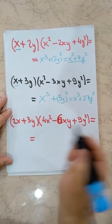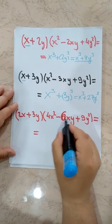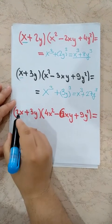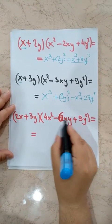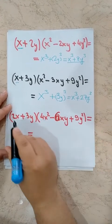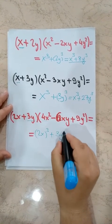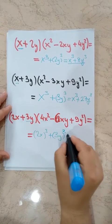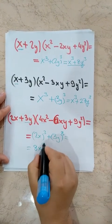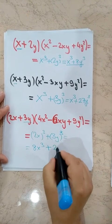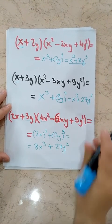Let's try another example: 2X plus 3Y times 4X squared minus 6XY plus 9Y squared. First term is 2X and second term is 3Y. So we get 2X cubed plus 3Y cubed. Opening: 2 cubed is 8, X cubed is X cubed, plus 3 cubed is 27, Y cubed is Y cubed — giving 8X cubed plus 27Y cubed.